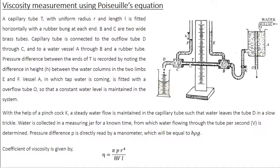On either end, it's connected to two wide brass tubes B and C. On one side, the capillary tube is connected to an outflow tube D through the brass tube C. And on the other end, the capillary tube is connected to a water vessel A through B and a rubber tube.